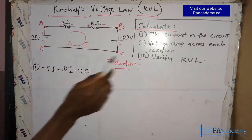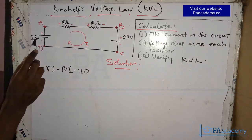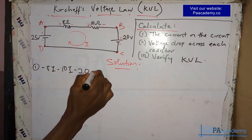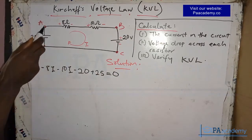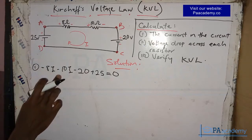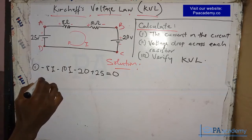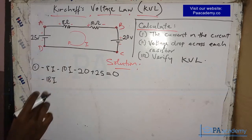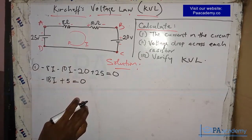Continuing from C to D, we encounter the 25-volt source. Moving from minus to plus gives us plus 25. We then return to point A with no other elements. So the full KVL equation is: minus 8I minus 10I minus 20 plus 25 equals zero, which simplifies to minus 18I plus 5 equals zero.